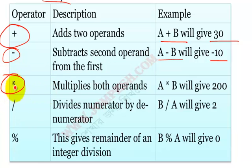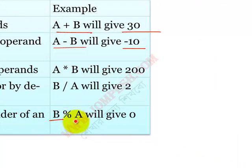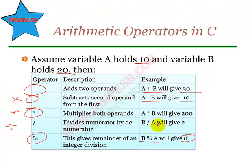Multiplication uses the star symbol. In mathematics we use different symbols. For divide, we get the result of division. And modular - percent a modulo b gives 0. These are arithmetic operators in C.